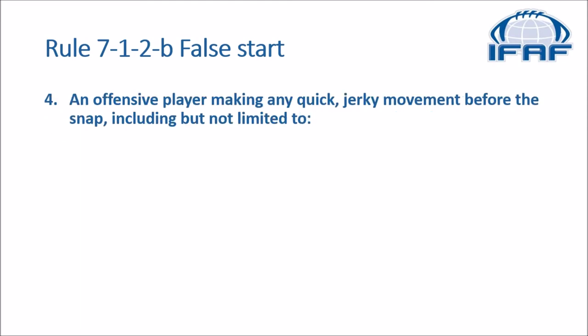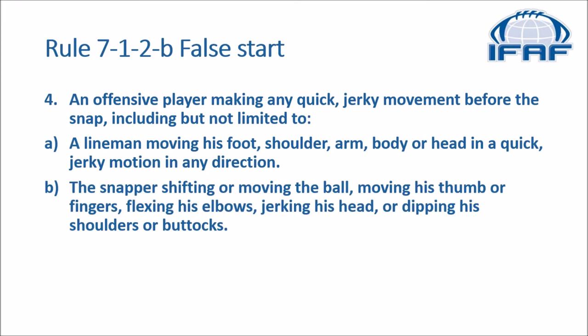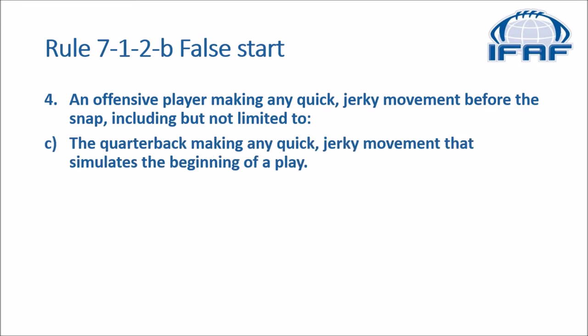And four: it is also a false start when an offensive player makes a quick jerky movement before the snap, included but not limited to — A, a lineman moving his foot, shoulder, arm, body, or neck in a quick jerky motion in any direction. B, the snapper shifting or moving the ball, moving his thumb or fingers, flexing his elbows, jerking his head, or dipping his shoulders or buttocks. C, the quarterback making any quick jerky movement that simulates the beginning of a play.